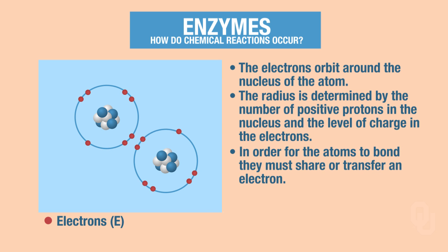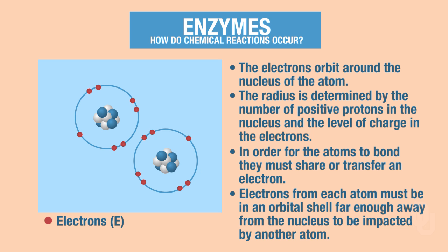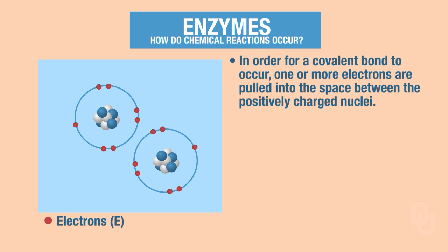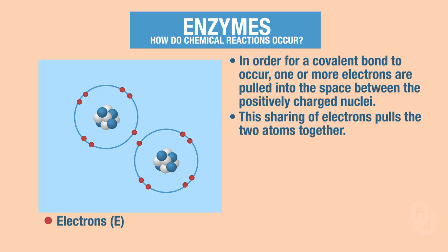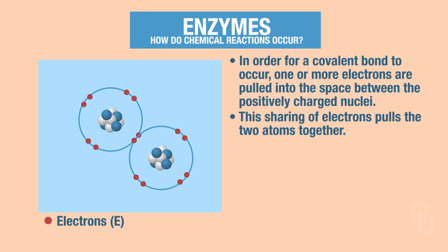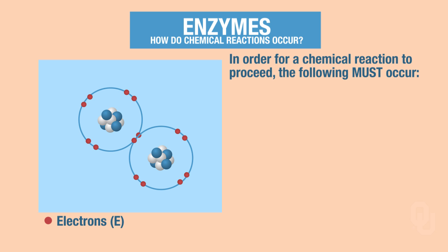In order for two or more atoms to come together and share a strong chemical bond, the atoms have to share or transfer electrons. This means electrons in each atom have to be in an orbital shell that is far enough away from the nucleus to be influenced by the other atom. For example, in order for a covalent bond to occur, one or more negatively charged electrons are pulled into the space between the positively charged nuclei and are attracted to both. This sharing of electrons holds the two atoms together, which takes us back to the concept of ionic bonds and covalent bonds.